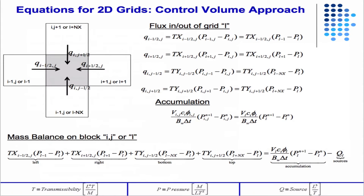For an arbitrary block i, j, we use a control volume approach to write down all the fluxes using our new indices. We wrote them down both ways: using i and j for the transmissibility, but also using L for the pressures. The accumulation is just what it was before, now using the new index L.